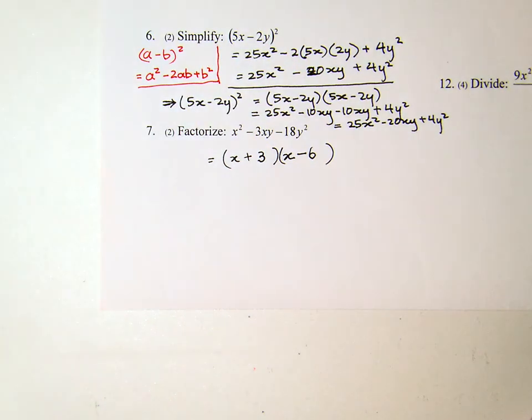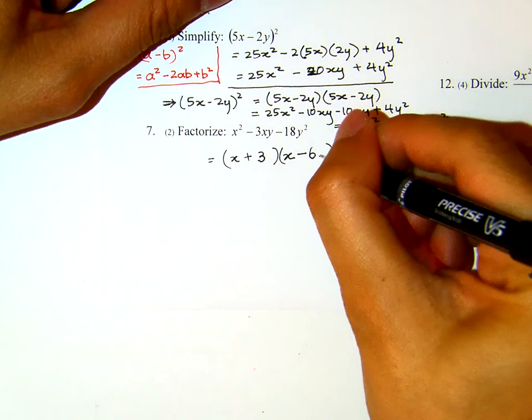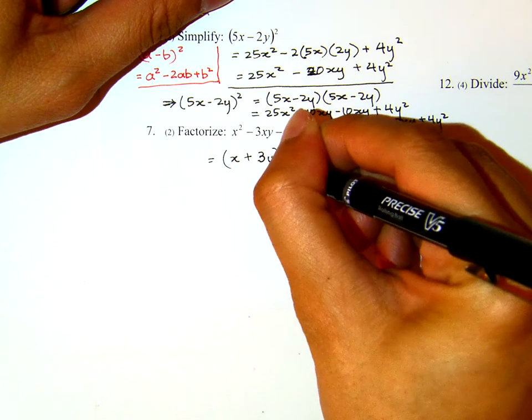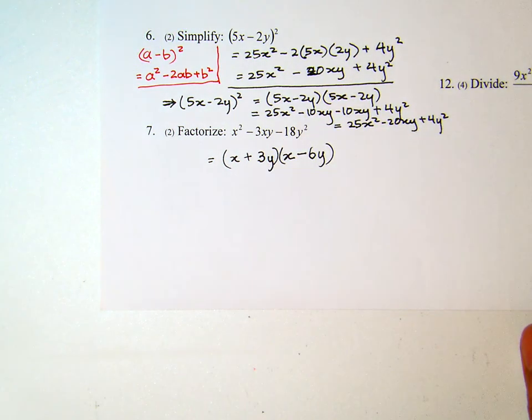But we are not done here. If we FOIL this, you will get x squared minus 3x minus 18. Now how do we take care of the y? Just put y here and y here, and that will solve the problem. That's for number 7.